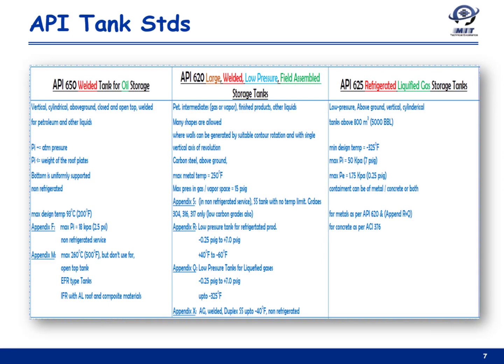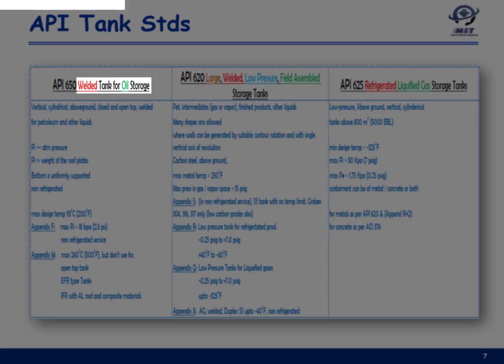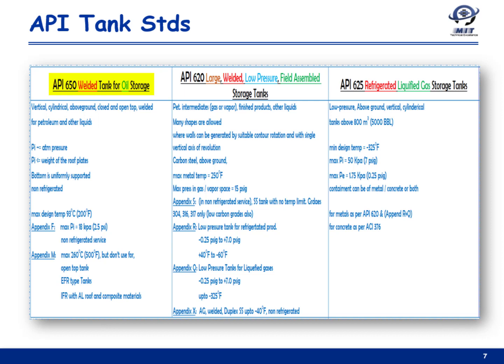The key features of API storage tank standards are now listed and compared. For API 650, the title itself indicates it is for welded oil storage tanks — so it cannot be applied for riveted or bolted construction and is primarily developed for the petroleum industry. As per its introduction, it applies to vertical, cylindrical, above-ground storage tanks — not horizontal tanks or non-cylindrical shapes.